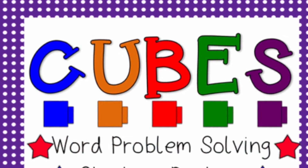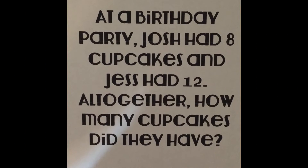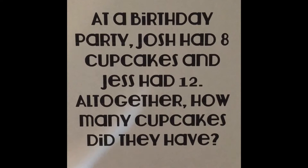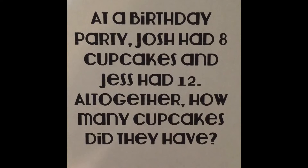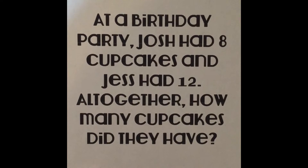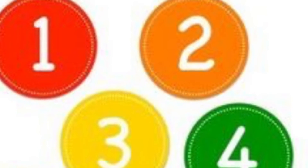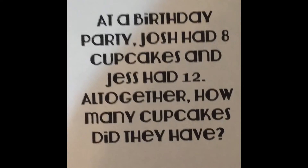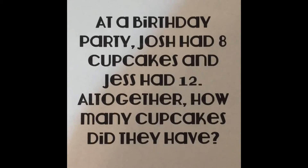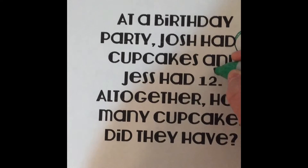This video is breaking down the word problem-solving strategy of CUBES. First, we're going to read the question: at a birthday party, Josh had eight cupcakes and Jess had twelve. All together, how many cupcakes did they have? The first step in CUBES is to circle the numbers, and the two numbers in this word problem are eight and twelve.